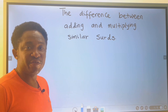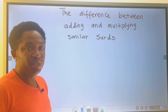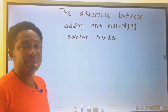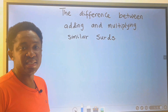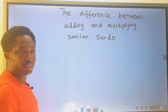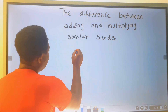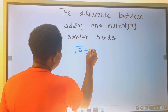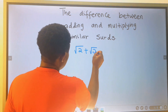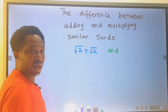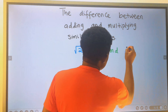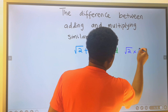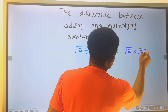Let's consider the difference between adding and multiplying similar surds. For example, the square root of 2 plus the square root of 2, and the square root of 2 multiplied by the square root of 2.